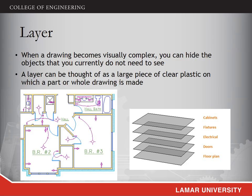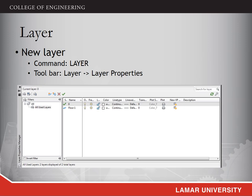In the design of a room layout, you can split the design into cabinets, fixtures, electrical, doors, and floor plan — drawing the same types of objects in one layer. In the next several slides, I will show you how to operate layers in AutoCAD.